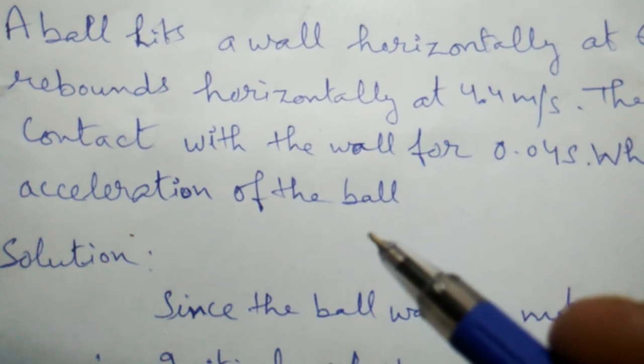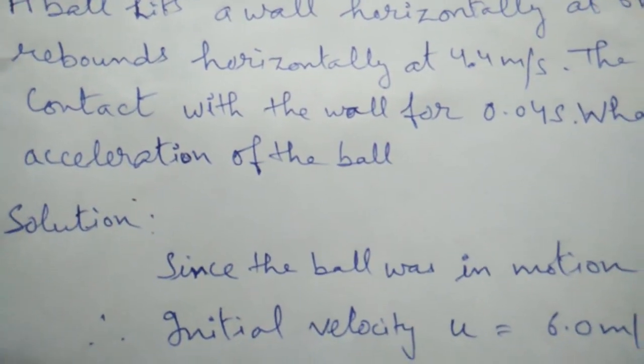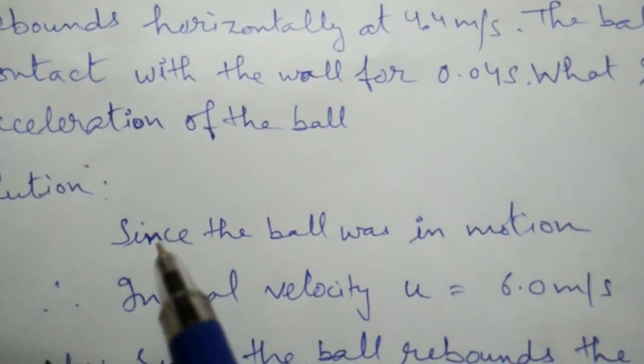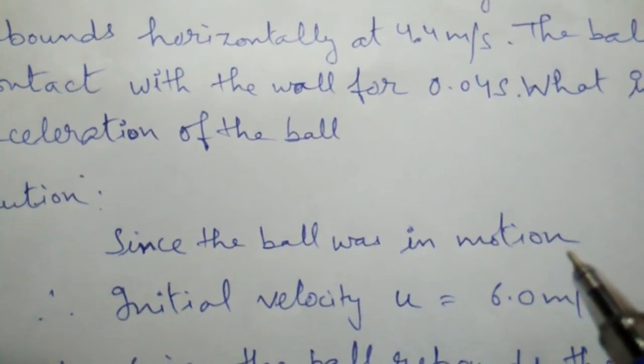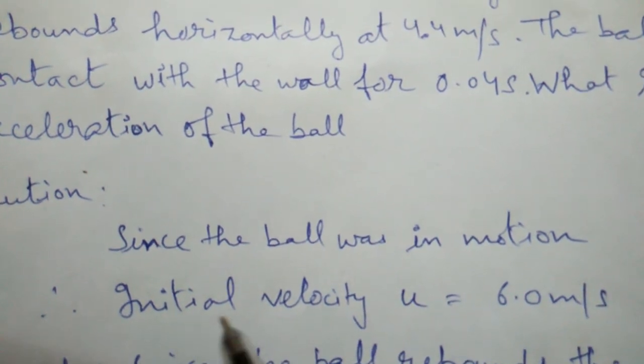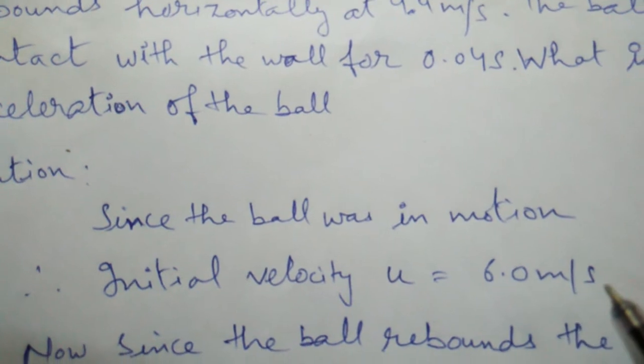So here we have to find the acceleration of the ball. Since the ball was in motion, the initial velocity u will be 6.0 meters per second.